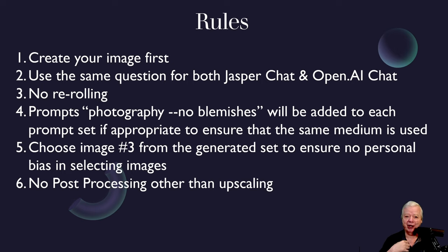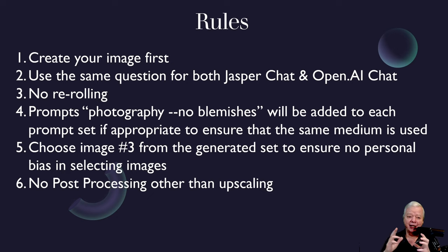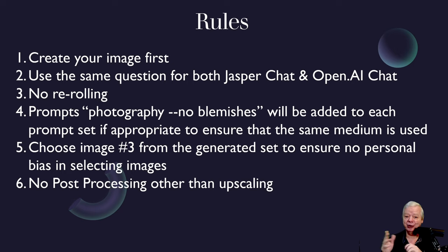I'm going to create my image first. Let's say I want to create an image of a cat — I type in all my prompts for the cat and then create four images based off that. Then I take a question and feed that same question to Jasper and OpenAI to create the same type of cat photo. So if I say I want a white cat with a black background, I'd tell Jasper: please give me a description of a white cat in a black background, and I'd use that same question for OpenAI chat. Then I copy and paste those prompts into MidJourney and see who creates the best image.